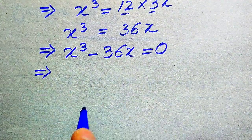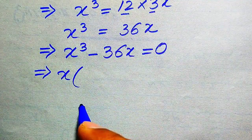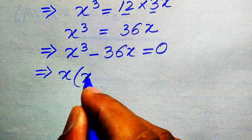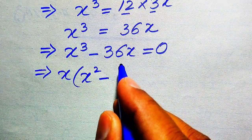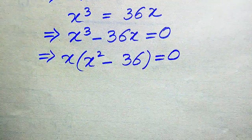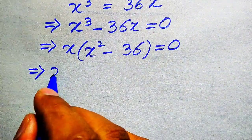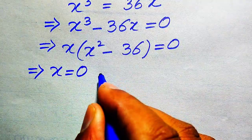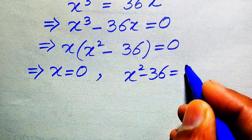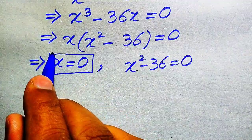Both terms involve x, so we factor out x. Taking x common from x cubed minus 36x, we get x times (x squared minus 36) equals zero. This splits into two cases: x equals zero (first root), and x squared minus 36 equals zero.